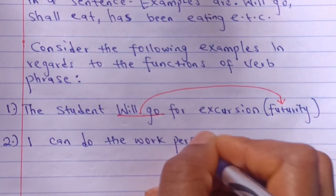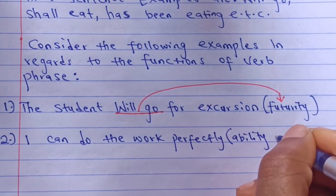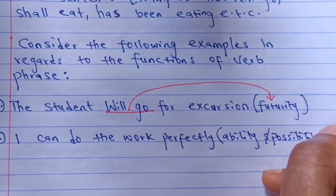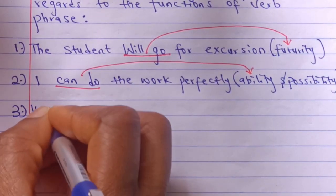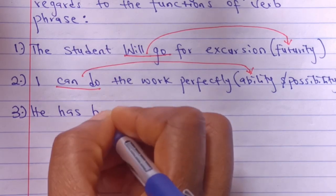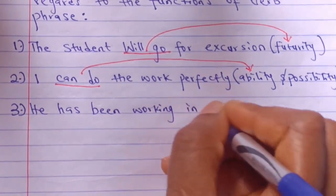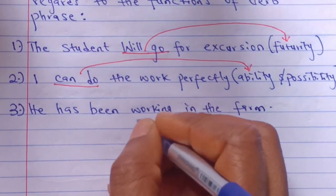Ability. Number two: I can do the work perfectly. The verb phrase here is can do and it shows ability and possibility.